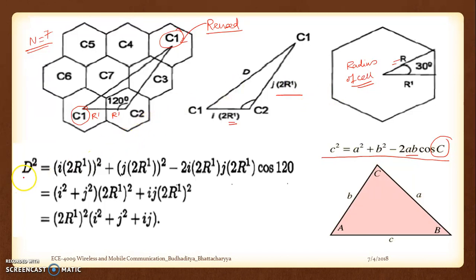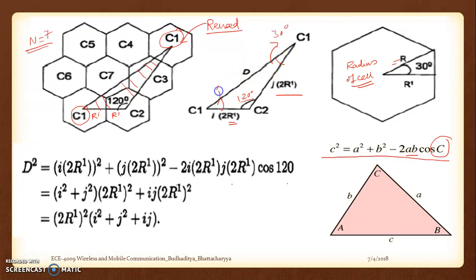We fit the data into this triangle for c1 and c2. Now d² is the square of the two sides minus 2ab multiplied by cos of the angle subtended, which in this case is 120 degrees. This is quite obvious from trigonometry — the angles come out to 30 degrees each, based on the assumption that this is a purely hypothetical ideal hexagon. All these angles derive from the geometry of the hexagon itself. Substituting all this data, we arrive at: d² = (i² + j²)(2r1)² + ij(2r1)².